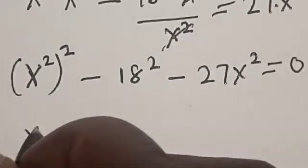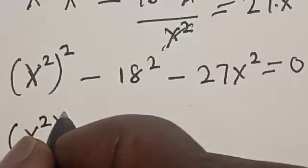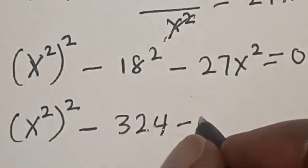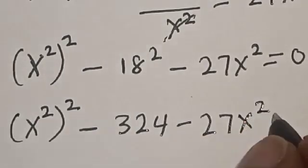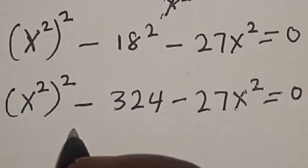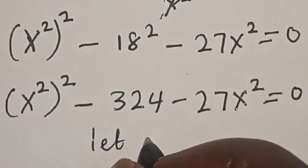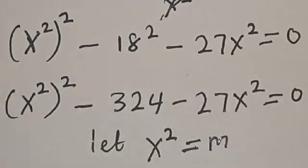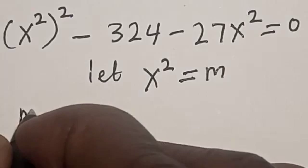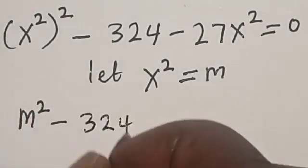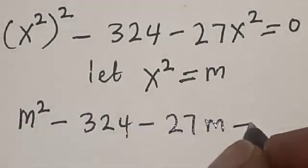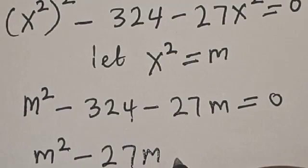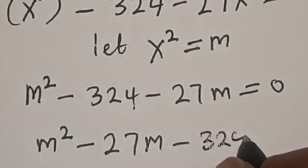So we have x to the fourth minus 27x squared minus 324 equals 0. Let m equal x squared. Rearranging, we have m squared minus 27m minus 324 is equal to 0. This is a quadratic equation in m.